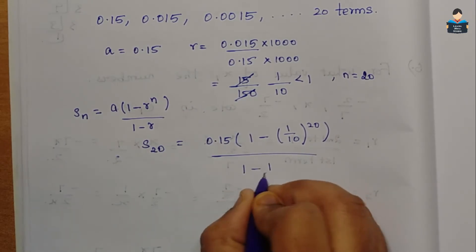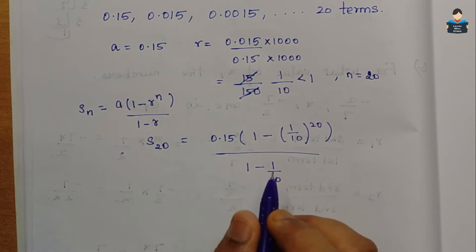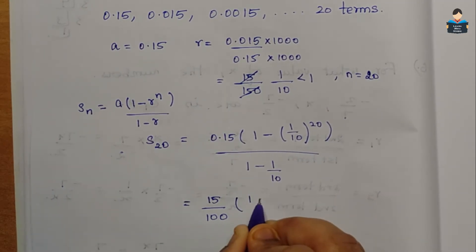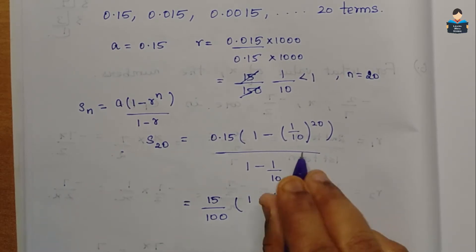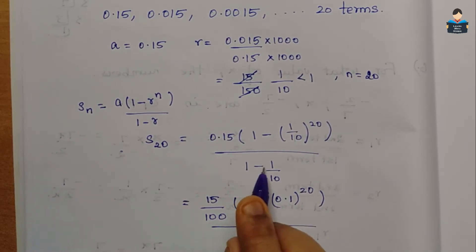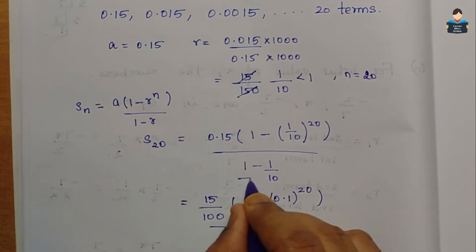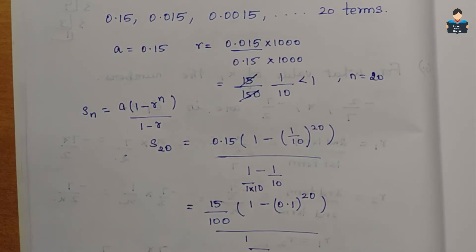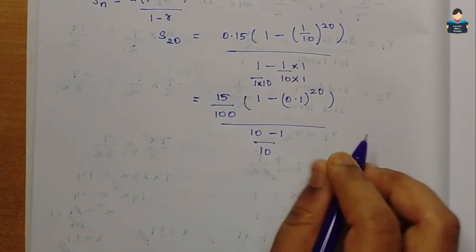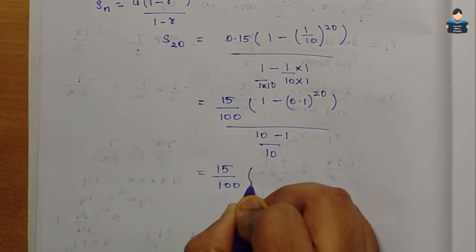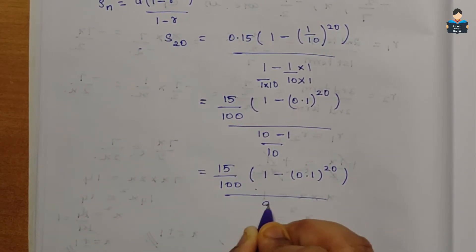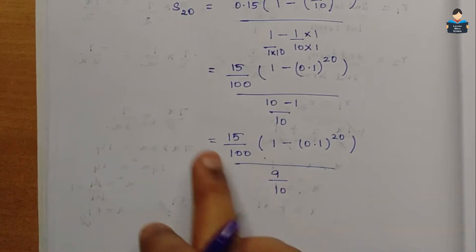Simplifying: 0.15 = 15/100. So S₂₀ = (15/100) × (1 − (1/10)^20) / (1 − 1/10). The denominator becomes 9/10. Multiplying numerator and denominator: (15/100) × (10/9) × (1 − 0.1^20).